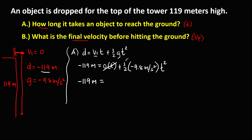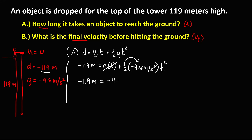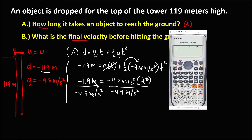Simplifying: the zero term drops out, and one half times negative 9.8 equals negative 4.9. So we have negative 119 meters equals negative 4.9 meters per second squared times t squared. Dividing both sides by negative 4.9 meters per second squared, negative 119 divided by negative 4.9 equals 24.29.